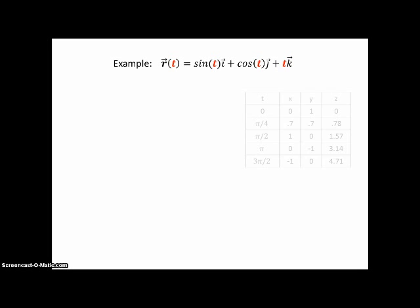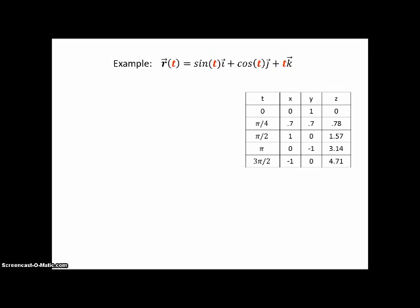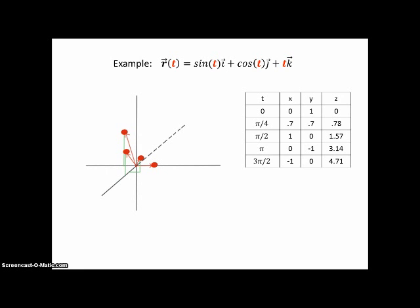Here's a table of values with some convenient values for t. The first point is (0, 1, 0), and there's a vector pointing to that point. The second point is approximately (0.7, 0.7, 0.78). Then (1, 0, π/2), or approximately 1.57. Then (0, −1, π). The last point in the table is back behind the screen: x = −1, y = 0, and z = 3π/2, or about 4.71.